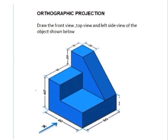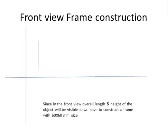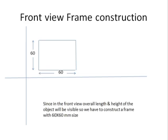For the orthographic projection, you have to draw three frames. First, what is the front view frame? It is 60×60 mm, since in the front view the overall length and height of the object will be visible. So we have to construct a frame with 60×60 mm size as shown in the figure.